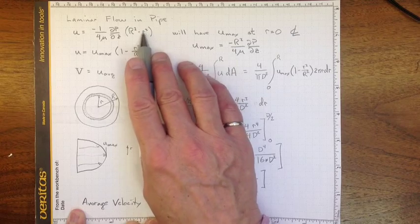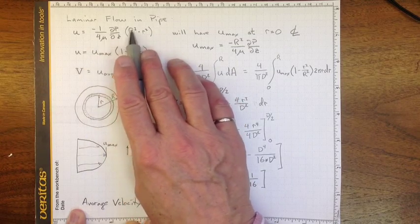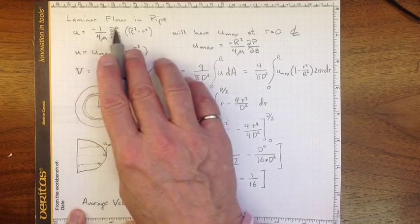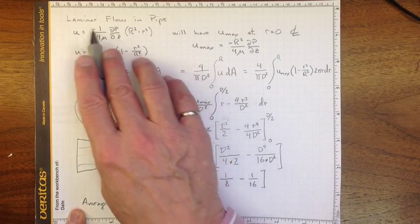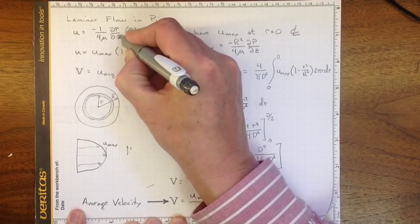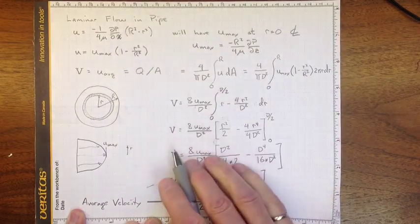right here. So that's u_max. And if we use that information, we can find out what that actual maximum value will be. R squared will be zero, small r squared. So we'll have R squared over 4μ dp/dx, and it's negative because dp/dx is negative. The pressure is dropping as we go—whoops, that should be a dx. Pressure is dropping as we go in the x direction.